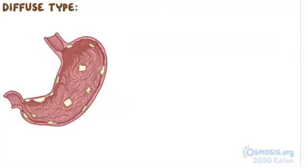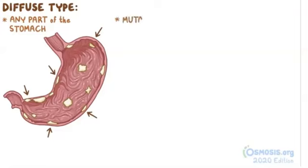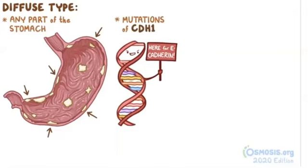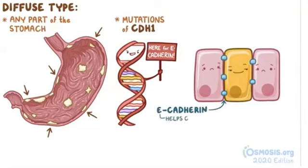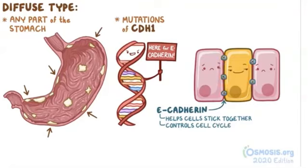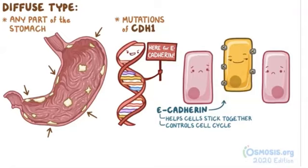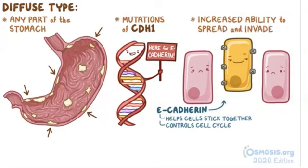Alternatively, the diffuse type of adenocarcinoma can appear in any part of the stomach, and it's mostly related to genetic mutations in the CDH1 gene, a tumor suppressor gene that codes for a membrane adhesion molecule called e-cadherin. Normally, e-cadherin helps epithelial cells stick to one another, and it also transmits signals that control the progression of the cell cycle. But when e-cadherin isn't working properly, cells detach and start dividing uncontrollably. This type of adenocarcinoma has an increased ability to spread and invade adjacent structures, so it's way more aggressive than the intestinal type.